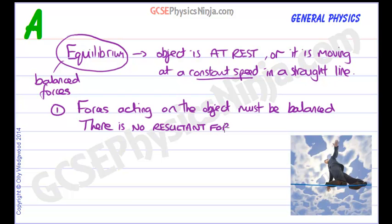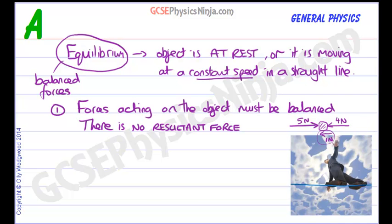Think of resultant as meaning the winning or resulting force. For example, if I have a force of 5 newtons acting on a body one way and a force of 4 newtons acting the other way, they nearly balance but not quite. The resultant force is 1 newton acting to the left — that's the winning force. So that would not be in equilibrium.